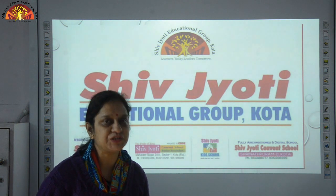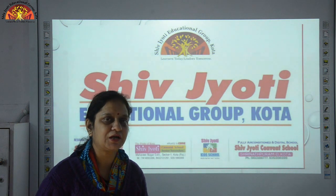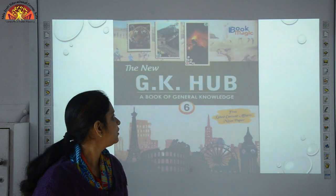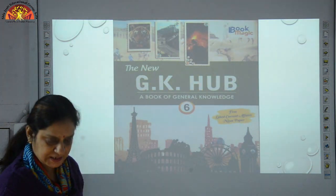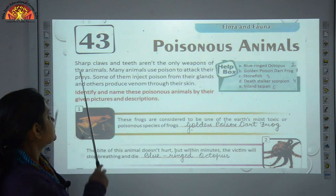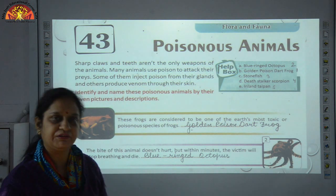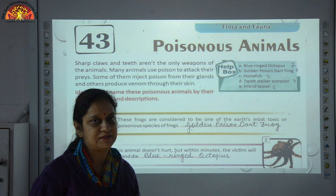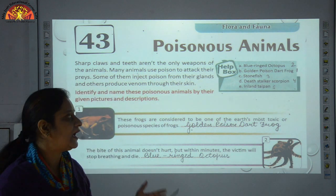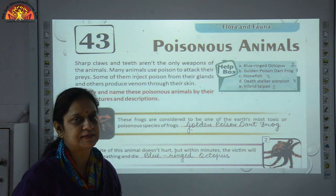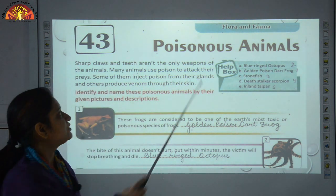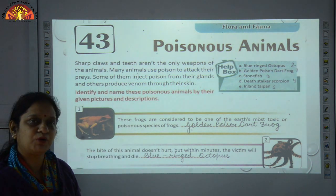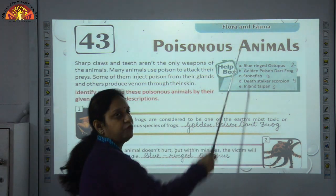Today we are going to start with GK. So take out your books, hurry up and pencils also. Class 6 GK, we will start with chapter number 43. Take out your pencils and fill all the answers in very neat and clean handwriting and try to understand the concept as well. We are starting with chapter number 43, that is Flora and Fauna.